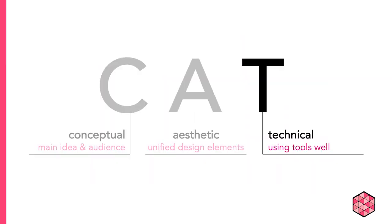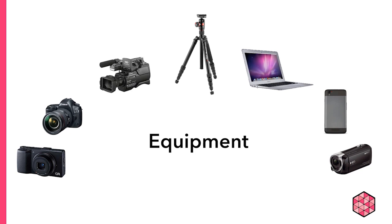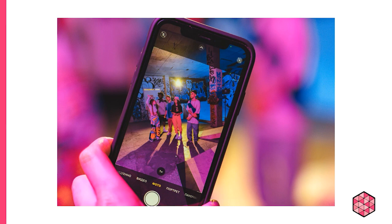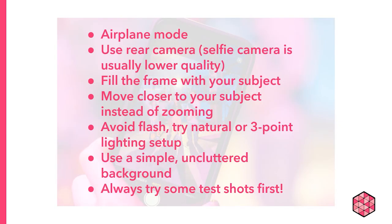Now I want to briefly touch on the last consideration of the CAT of effective design, and that's the technical. Don't overthink what equipment you use — instead, go for the simplest solutions and what you're most comfortable with. For most folks, this may mean recording using your phone. If you decide to shoot with your phone, here are a few tips: enter airplane mode, try to use your rear camera since your selfie camera is often lower quality, fill the frame fully with your subject, and it's often better to move closer to your subject instead of using digital zoom. Try to avoid flash — instead, try natural or three-point lighting setups. Use a simple and uncluttered background, and always try some test shots first.